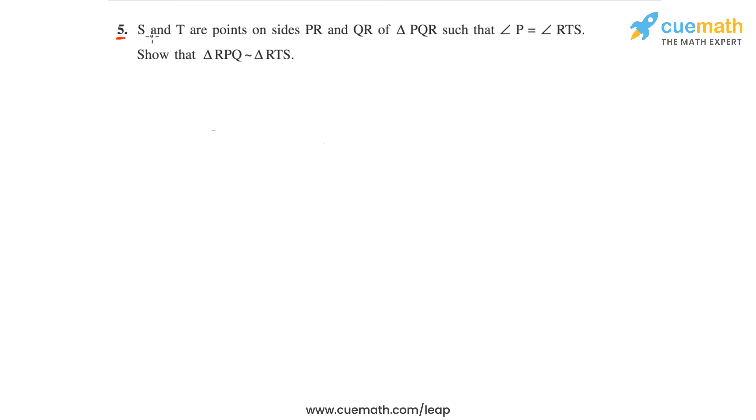Question 5 of this exercise says S and T are points on sides PR and QR of a triangle PQR such that angle P is equal to angle RTS. So to understand this statement, let's draw a figure for the given information.